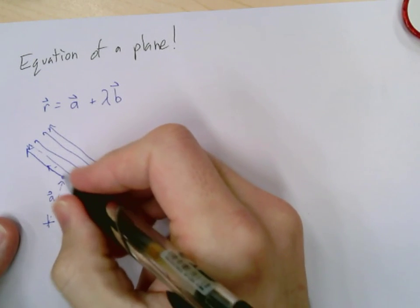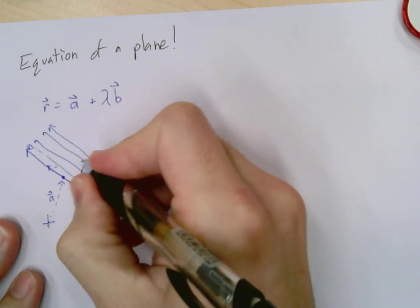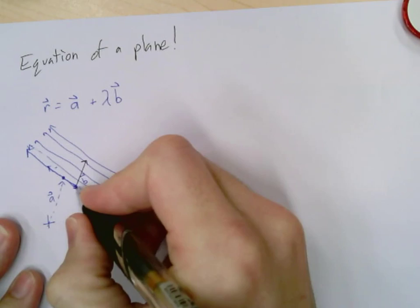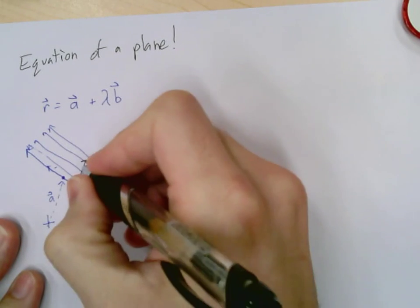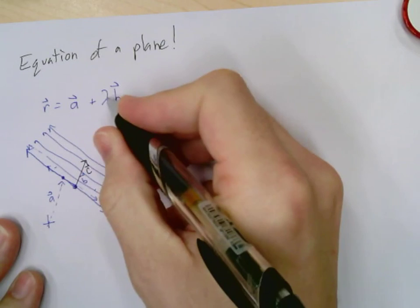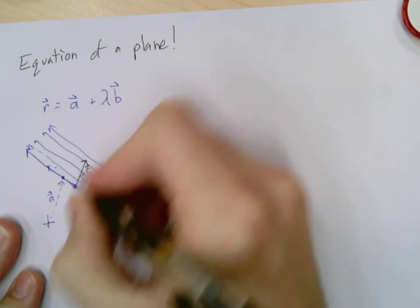And now I just need one other vector, some other vector that is not on a B. That's important—it cannot be on the line a B, but any other vector, whether it be this direction or coming out of the page or a mixture. So that vector right there, vector C, again with some type of parameters.